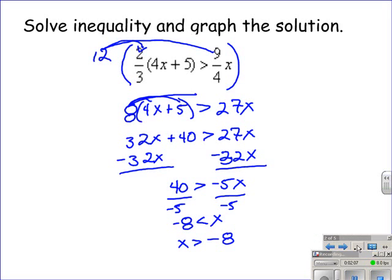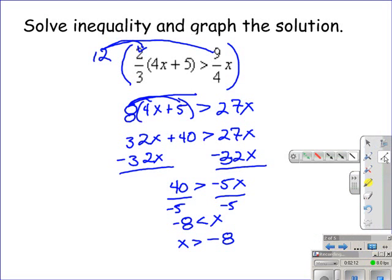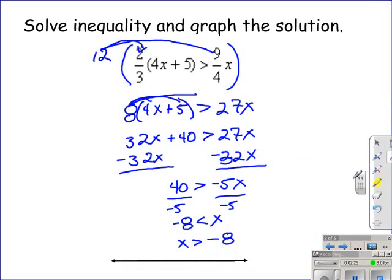To graph this, we're going to need to make a number line. It doesn't have to be a complicated number line. In fact, I make it pretty simple. I just make a number line, and the only number I put on that number line would be the negative 8. We use an open circle, because negative 8 is not a part of the solution, and we will shade that number line to the right, because x has to be greater than negative 8.